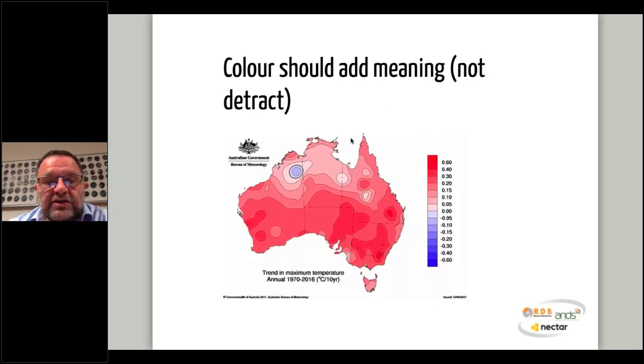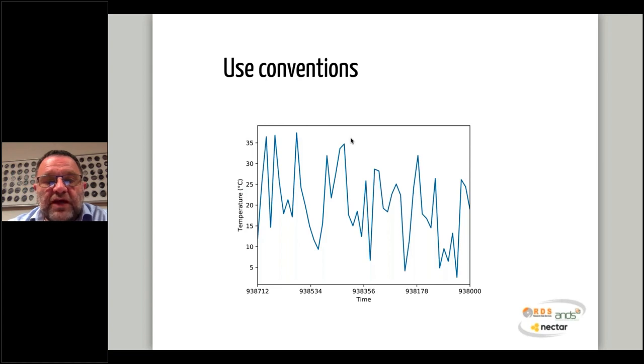Finally, colour should add meaning and not detract. And we come back to this slide, which is the warming trend in Australia since 1970. Clearly colour is enhancing the meaning of what we're trying to say here. Use conventions. If we look at this time series of temperature, at first look it may seem that temperature is actually declining. This is just a dummy slider created for this presentation. These temperatures are actually, if we look carefully at these numbers, we see the numbers are actually decreasing as we go from left to right. Normally, when we read from left to right, we expect time to increase. In other words, get either closer to the present or further into the future. By turning it around, we've defied that convention and made this a whole lot harder to read.